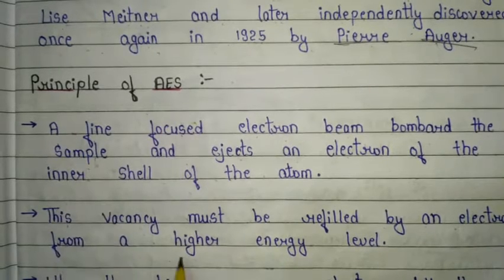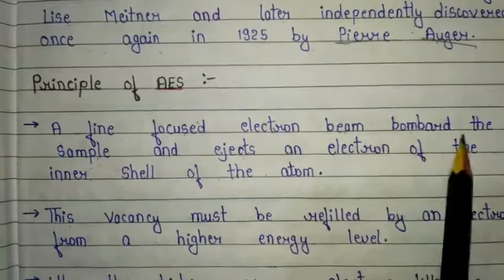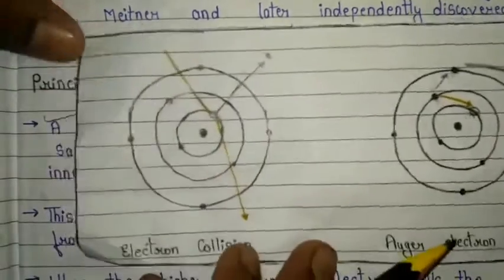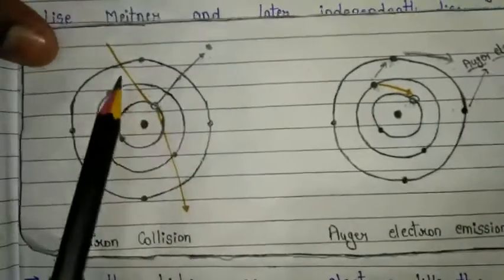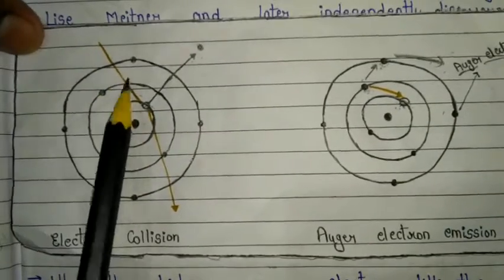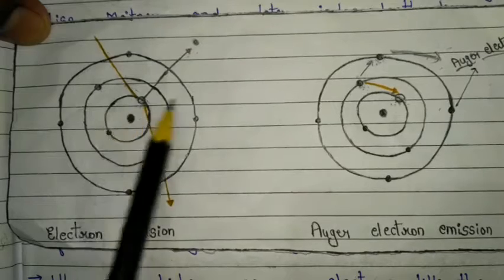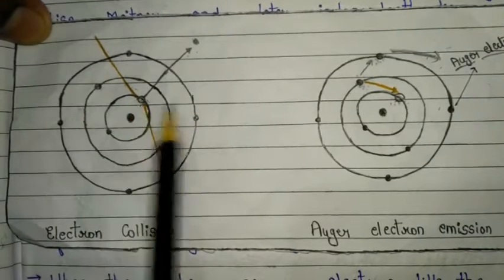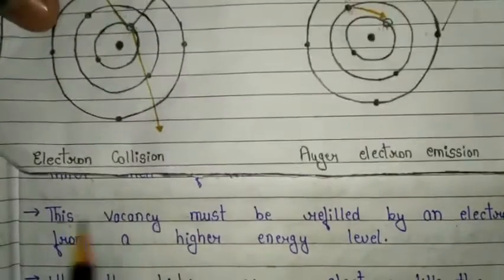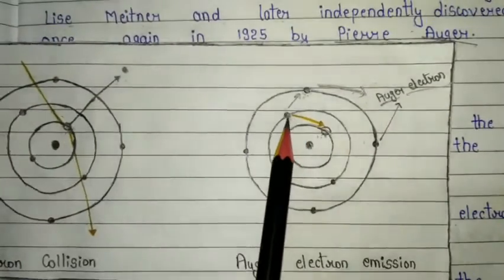The first point of the principle: a fine-focus electron beam bombards the sample and ejects an electron from the inner shell of the atom. Basically, electromagnetic radiation is used in the Auger electron spectroscopy process. When electromagnetic radiation bombards the electron of the inner shell of the atom, the electron moves out from there and a vacancy is created. This vacancy must then be refilled by an electron from a higher energy level.